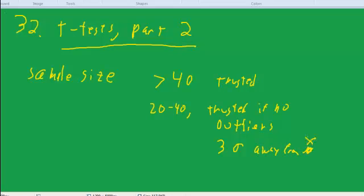And if you have an outlier, you don't want to trust these calculations with a sample between 20 and 40.